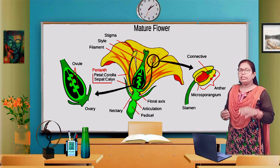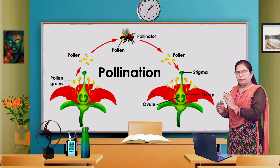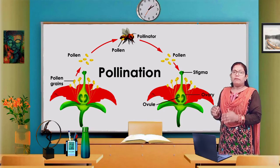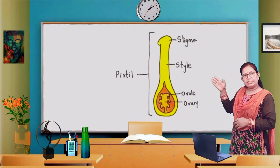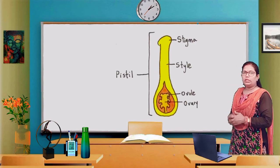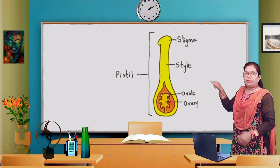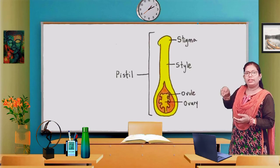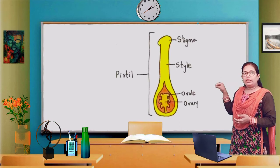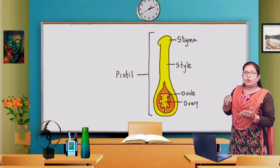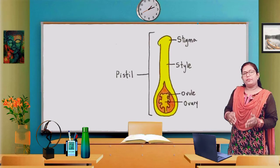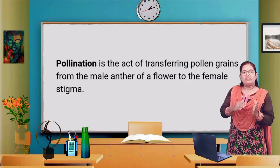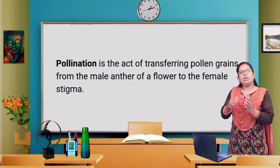In pollination, the transfer of pollen grains occurs to the stigma — the female reproductive part. The pistil has three parts: stigma, style, and ovary. The stigma is the upper flat platform where it receives pollen grains. So the process of transfer of pollen grains from the anther to the stigma is known as pollination. Pollination is the process of transfer of pollen grains from the anther to the stigma.